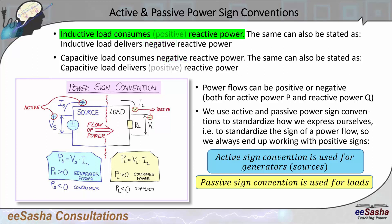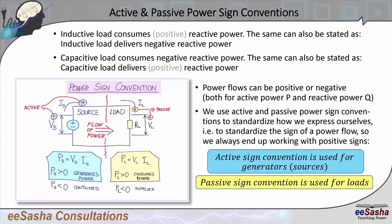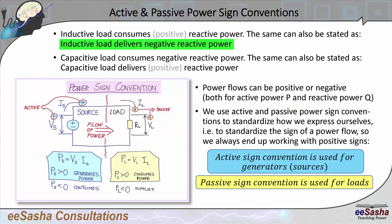You would normally say the inductive load consumes reactive power, and you would also say capacitive load delivers reactive power. But what you're actually changing here — because what's positive — you're changing this word from 'consume' to 'deliver', which means you're changing the convention. You probably wouldn't say 'inductive load delivers negative reactive power', because when you think of an inductive load, you think of it as a load, and a load consumes. But that second statement is correct — you can say it if you want. Inductive load delivers negative reactive power — that's perfectly fine.